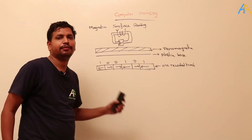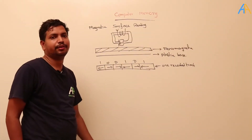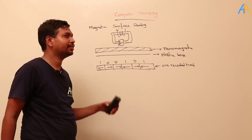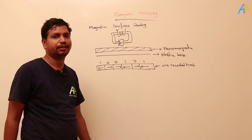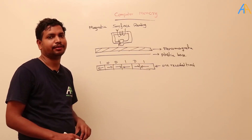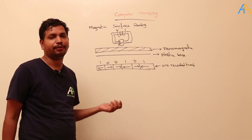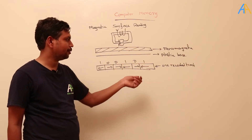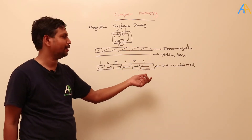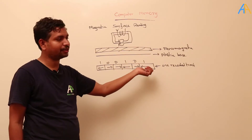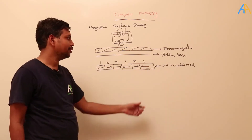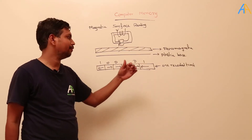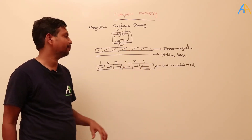Earlier we have seen memory using semiconductive edges — DRAM and SRAM. Now we will see magnetic surface recording, meaning memory made out of magnetic materials. The concept used here is magnetic pole alignment, that is dipole arrangement. Depending upon the dipole arrangement, they decide either zero or one.